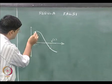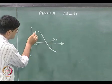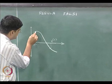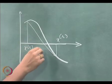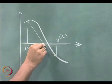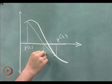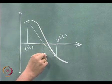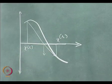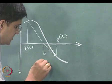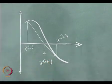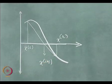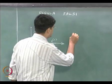What we did was we connected x_r and x_l with a line and we found out the intersection of the line with the x axis.